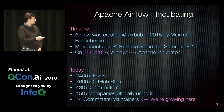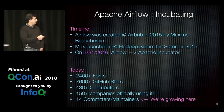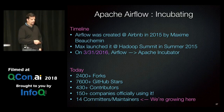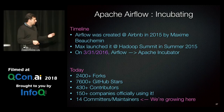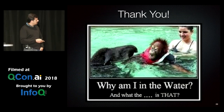Airflow has been around for about two and a half years. It was created at Airbnb in 2015, and Max launched it at Hadoop Summit that same year. In 2016 it entered the Apache incubator. Today it has over 2,400 forks, 7,600 stars, 430 contributors, 150 companies officially using it, and 14 committers and maintainers. That was about it — thank you. If you have questions, you can come up.